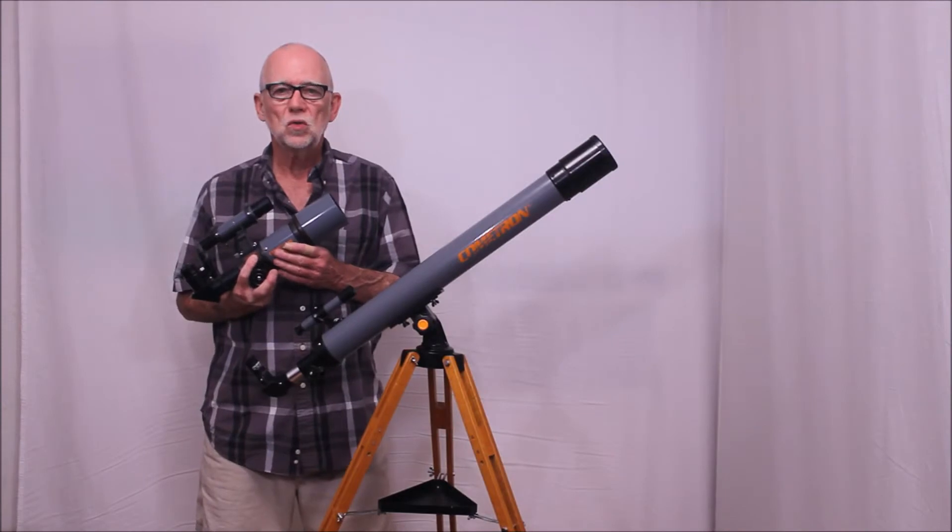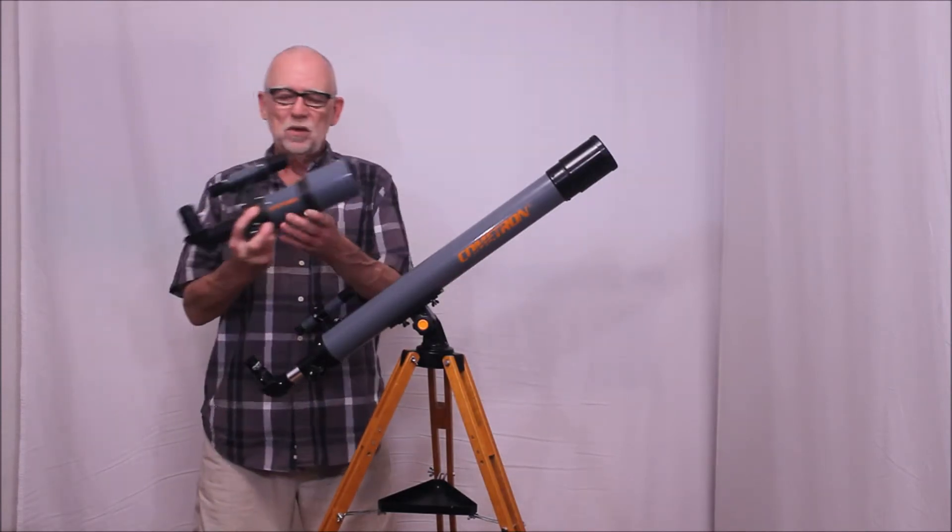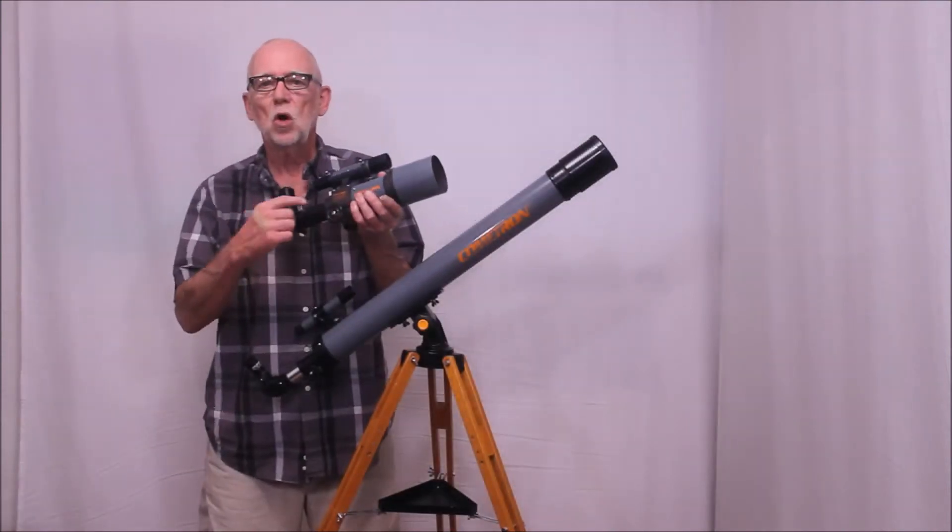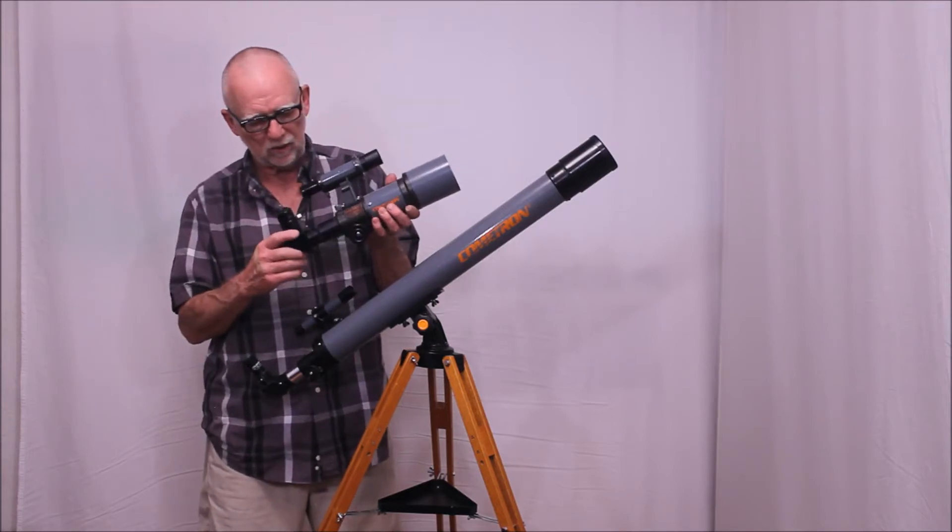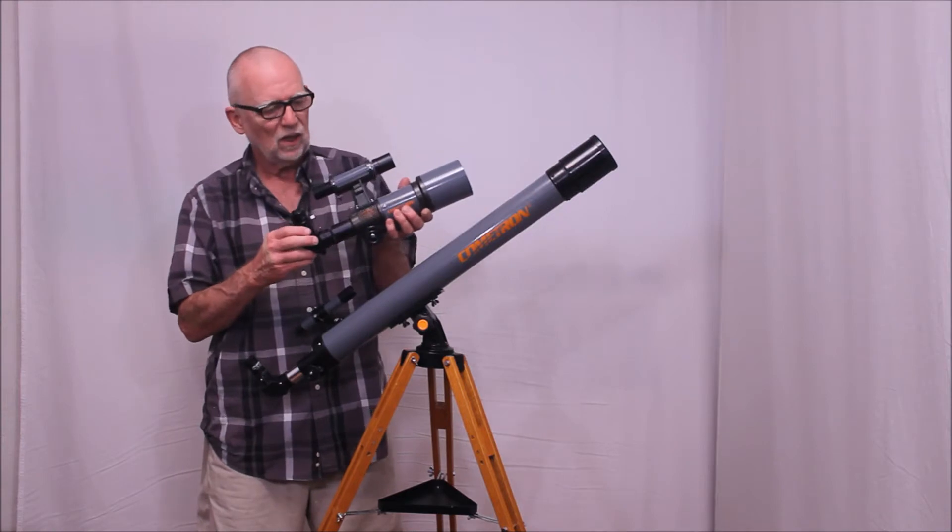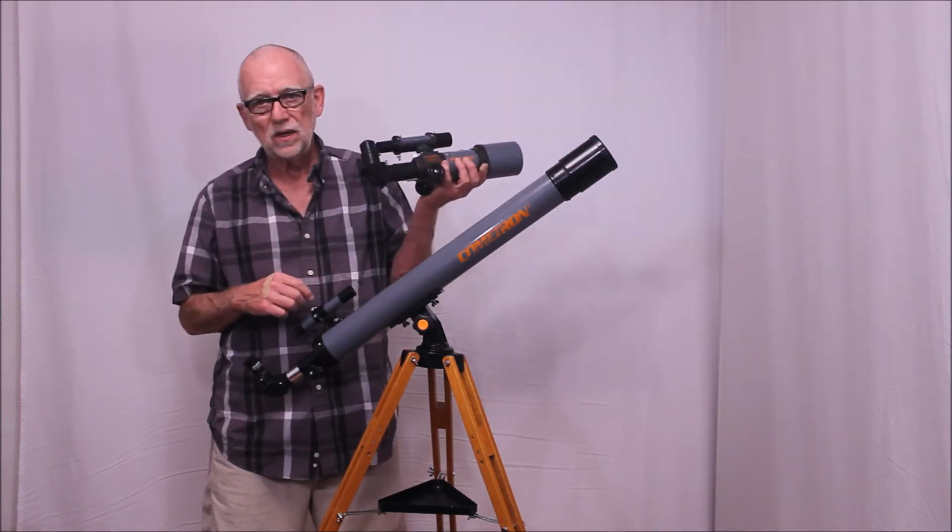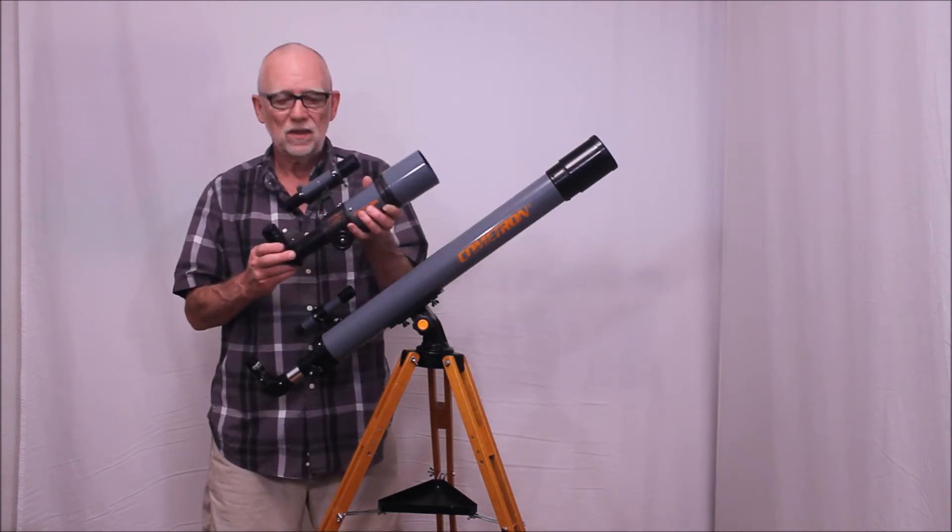Do not confuse the Celestron Cometron CO60 with the Celestron Cometron CO62. This scope is quite a different thing. It's a little short 60mm. It does accept inch and a quarter eyepieces. This one doesn't. And it has a fairly decent 6x30 finder. This finder is laughable. It's kind of a joke. So anyway, that's one difference.